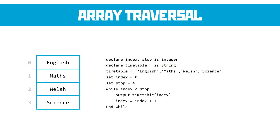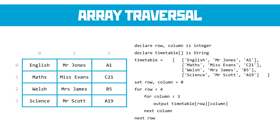Starting with a one-dimensional array: to iterate through it we use a while loop, moving through one index location at a time. For a two-dimensional array we need nested for loops — an outer for loop to work through the row, and within that an inner for loop to go through the column. It accesses data by going through each row and each column within that row, then the next row and its columns. Remember: we always reference the row before the column, because it is really an array of arrays behind the scenes.